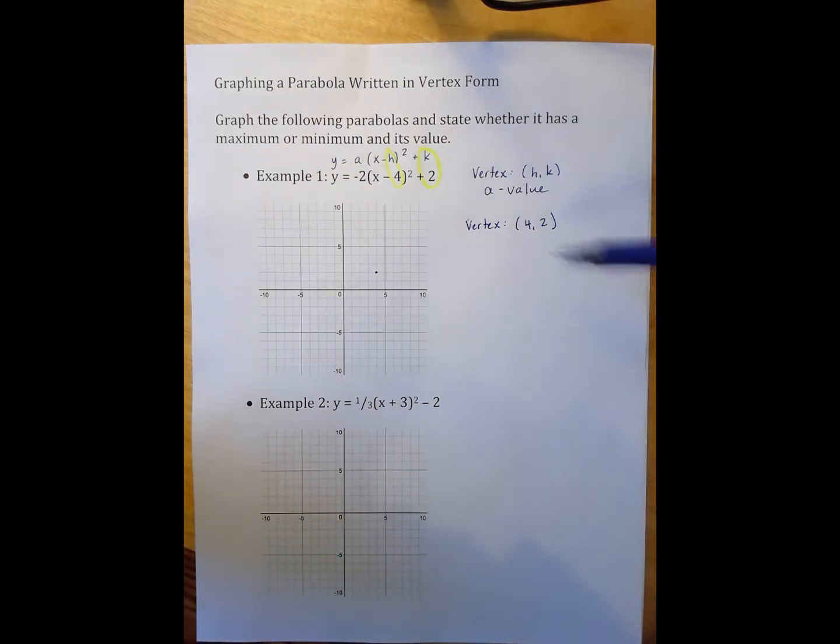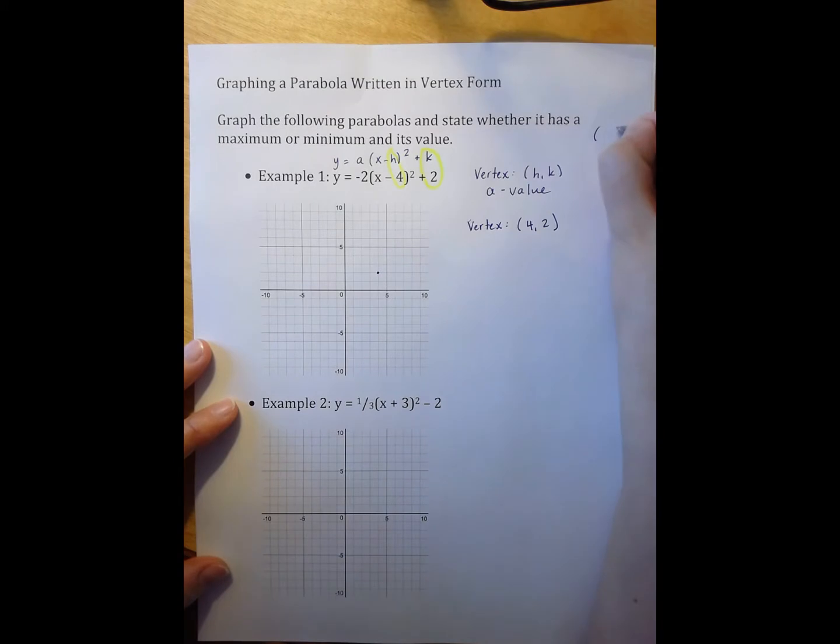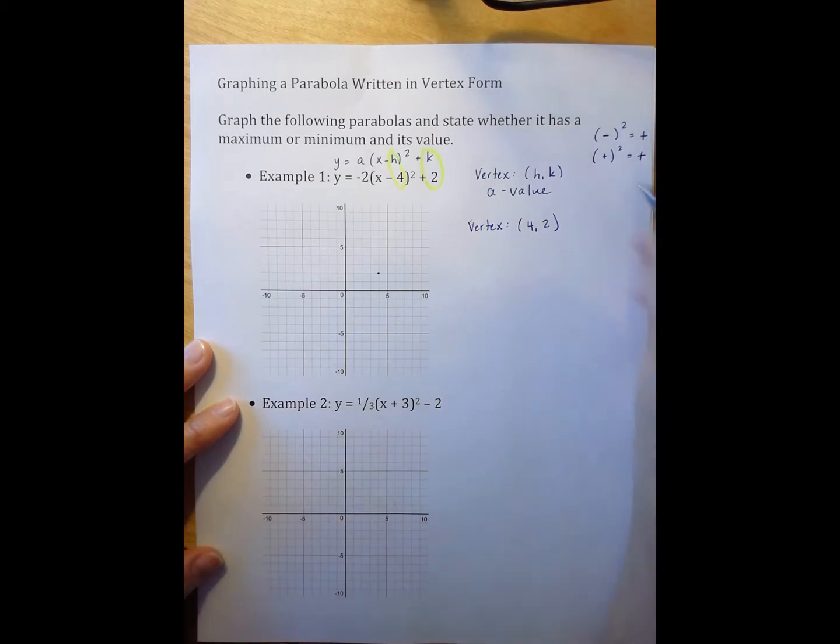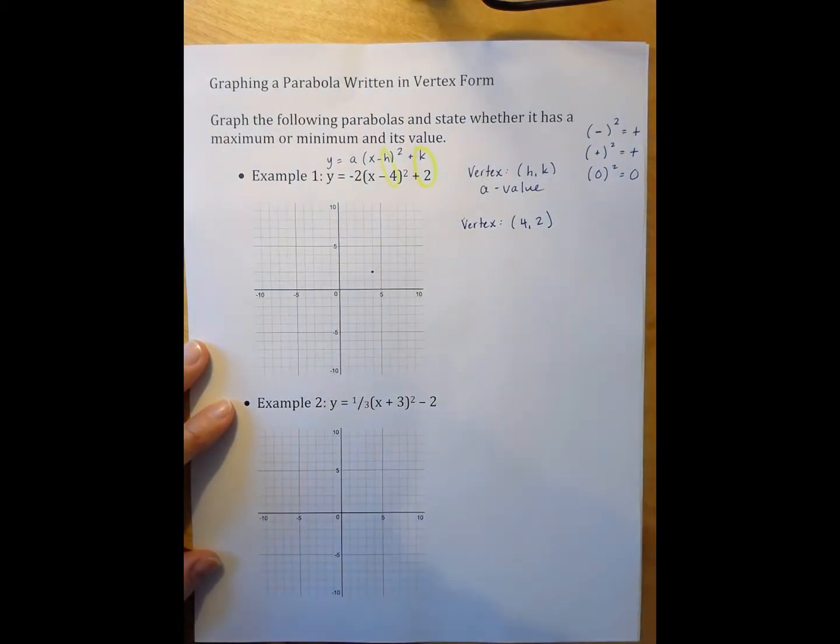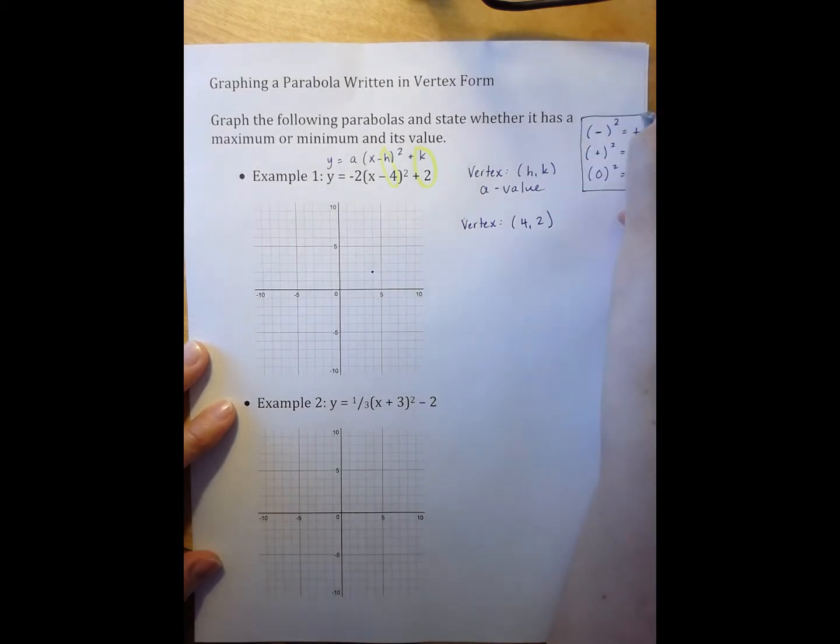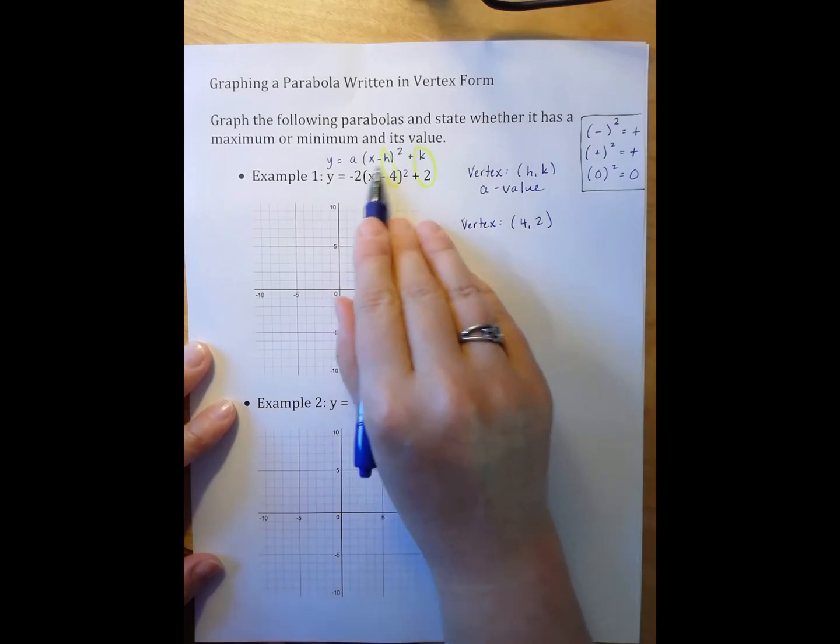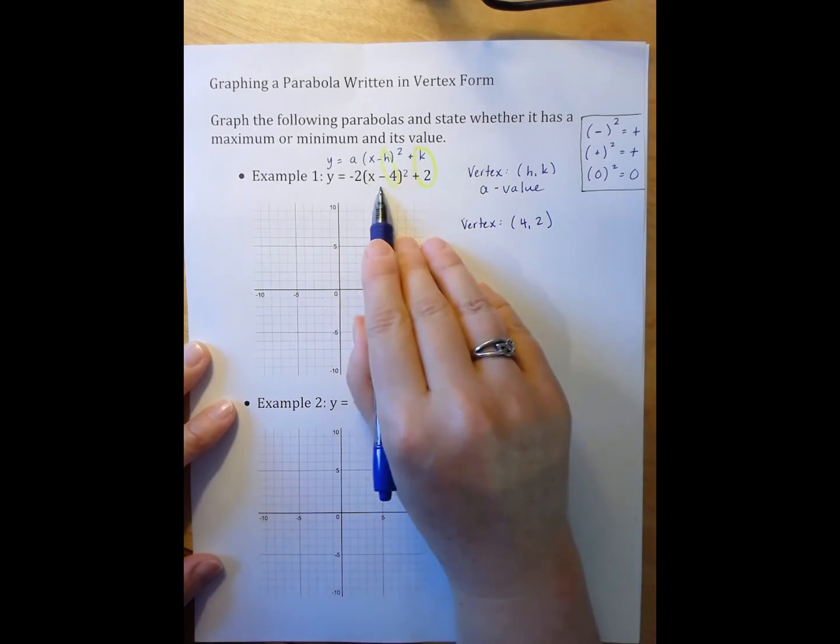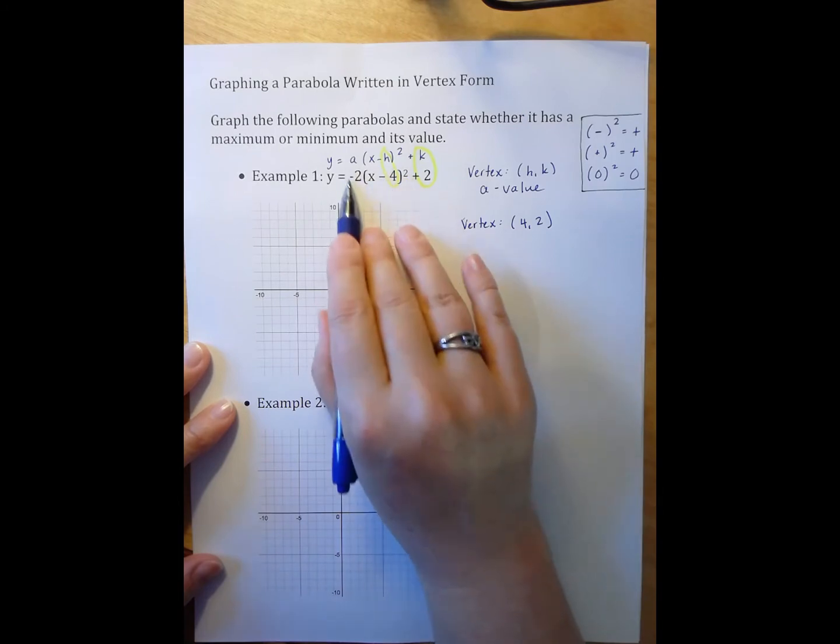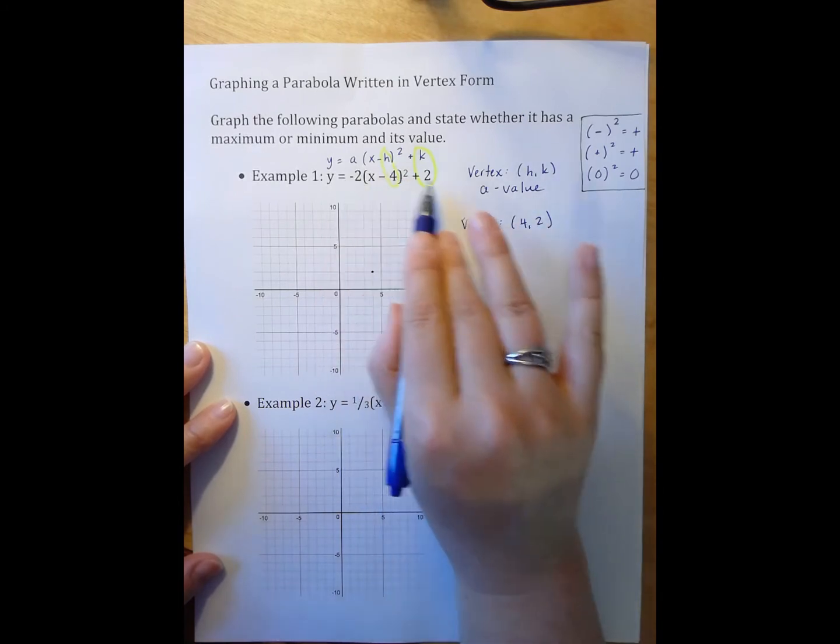Another way to think about the vertex value is that it's always at the top or the bottom, the extreme value. The most extreme value I can have when I square a number is 0. If I square a negative or positive number, I get a positive. So the most extreme is when I square 0. I'm always looking for what x would make this be 0. The x value that makes this quantity be 0 is 4. If I plug in 4 here, this whole part becomes 0, so my y would be 2.